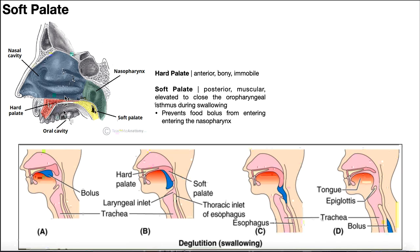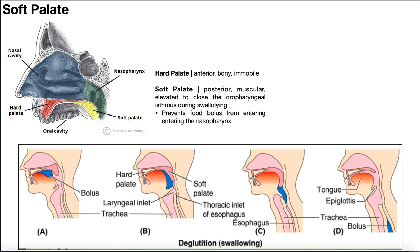The soft palate is posterior and largely muscular. Its function is to close the oropharyngeal isthmus during swallowing. When we swallow and move food from the oral cavity into the oropharynx, we don't want that food to move up into the nasopharynx and nasal cavity — we want food movement to be unidirectional. Let's look at the picture to get a better understanding.